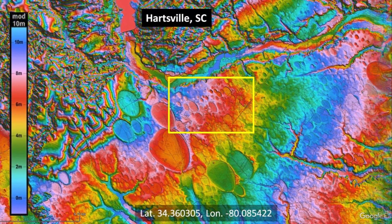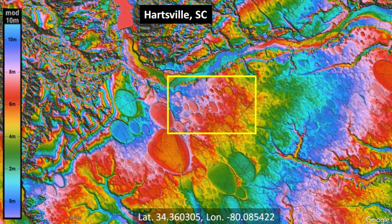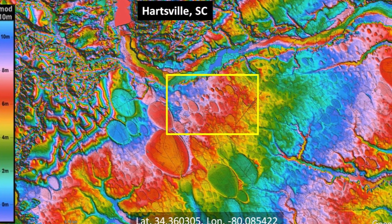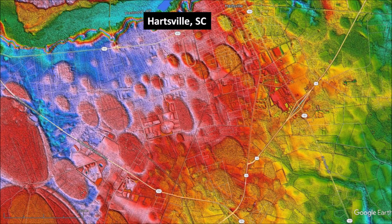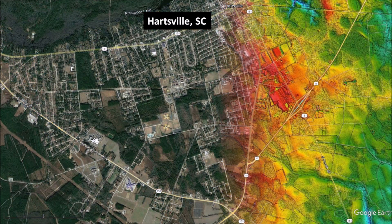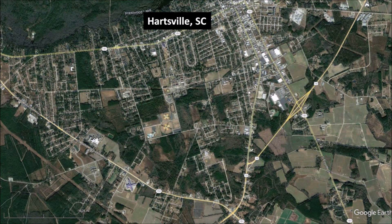We will now zoom in on Hartsville, South Carolina. The LiDAR image shows a multitude of Carolina Bays, and we can see a faint network of streets and roads. The satellite image of the same area shows all the man-made structures, but it is impossible to see any Carolina Bays.